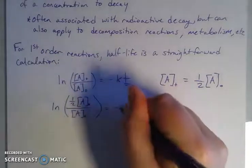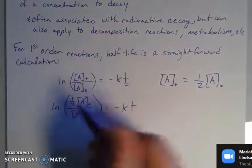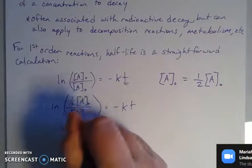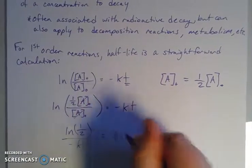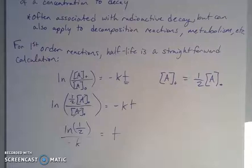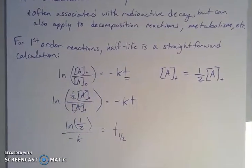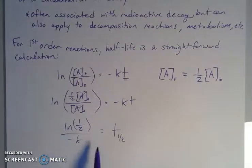Now I can get rid of my concentrations. This is the natural log of one-half. I can divide that by negative K, and that gives me my half-life T. That's the amount of time it takes for half of my sample to decay.